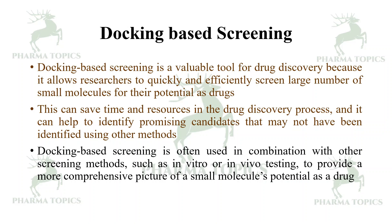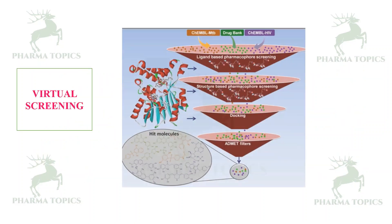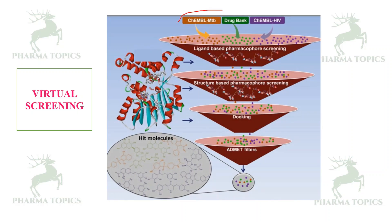Docking-based screening is often used in combination with other methods such as in vitro or in vivo testing. In virtual screening, you take ligand libraries from ChemBL, DrugBank, ZINC database, or PubChem. You can create a ligand-based pharmacophore model for screening, or if you have the protein structure, create a structure-based pharmacophore for screening. You perform docking simulations and apply ADMET filters using pkCSM, SwissADME, or ADMETlab — tools discussed in previous videos — to identify hit molecules for in vitro or in vivo studies.